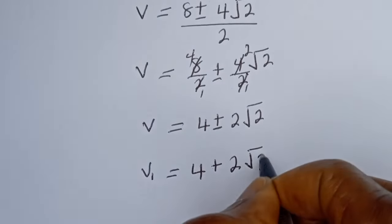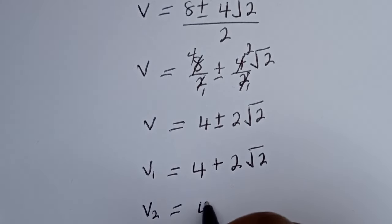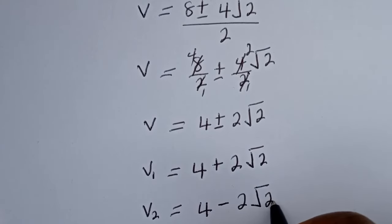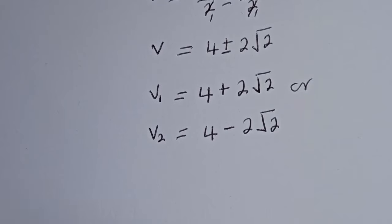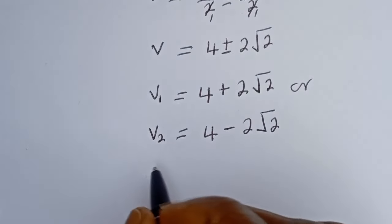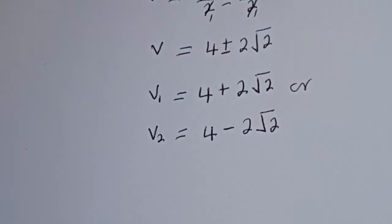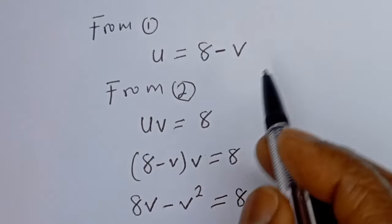So we have V1 equal to 4 plus 2 root 2, and V2 equal to 4 minus 2 root 2. Now let's solve for u from equation 1, where u is equal to 8 minus v.